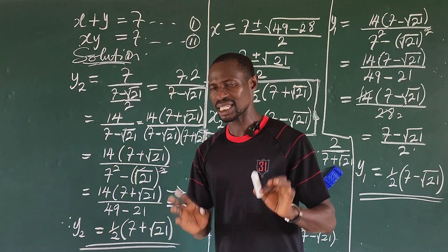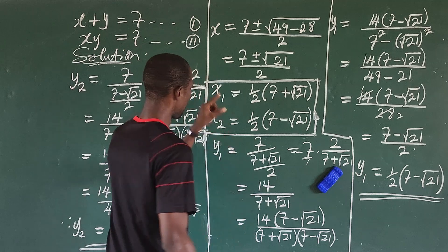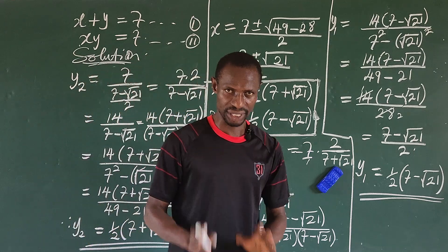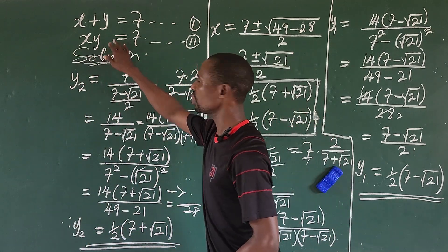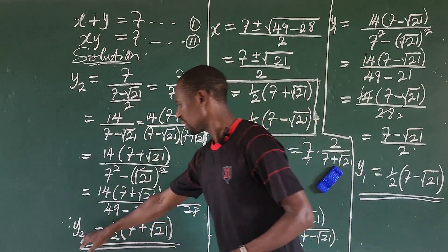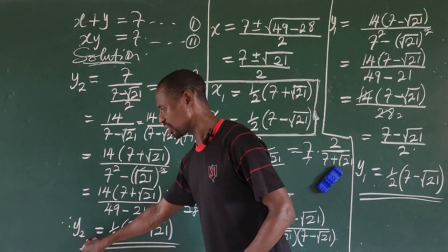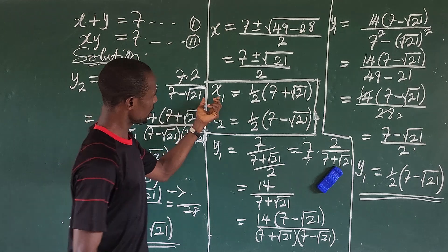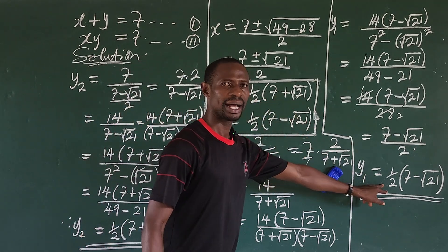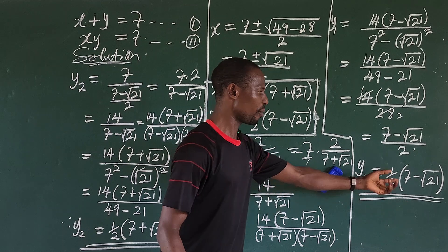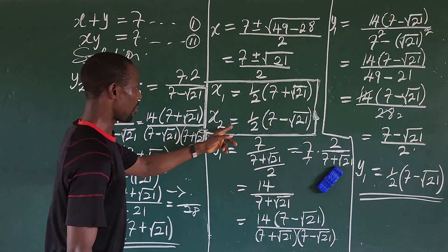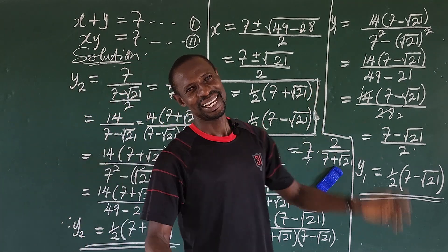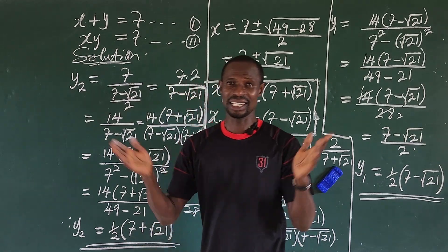To verify, plug x₁ and y₁ into the original system — you'll get 7 each time. Similarly for x₂ and y₂. As observed, y₁ is the conjugate of x₁, and y₂ is the conjugate of x₂. That completes this simple algebra challenge.